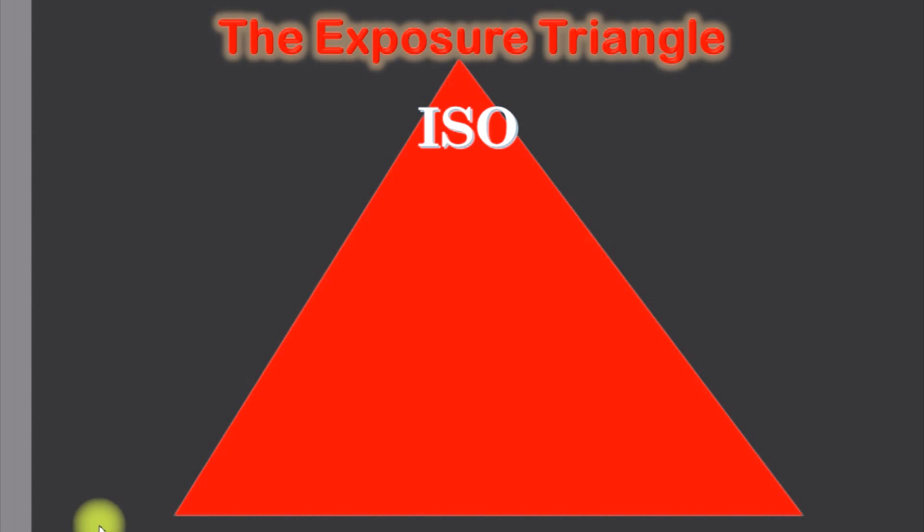ISO simply sets the camera's sensitivity to light. A higher ISO means that the camera is more sensitive to light. A lower ISO means that it's less sensitive to light.